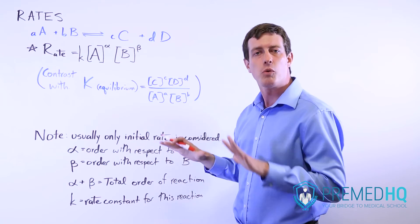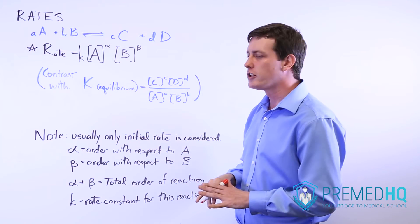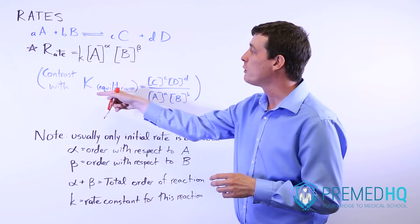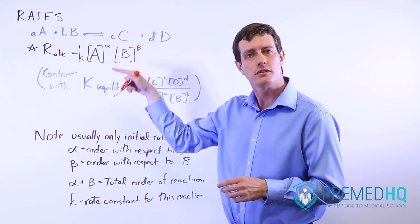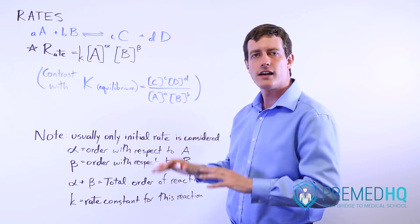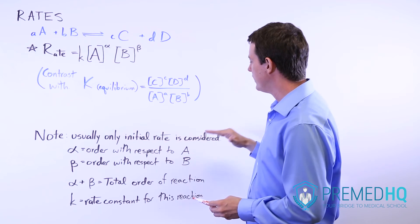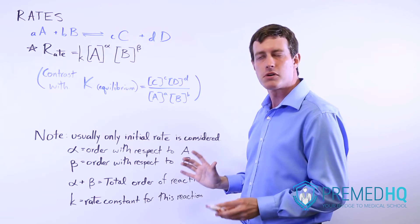Equilibrium constants don't. Those always remain the same whether you are at equilibrium or whether you're not. The equilibrium constant will always remain the same. The rate will not, and the rate tends to get slower as the reaction continues, and so you only consider the initial rate with most problems like this.